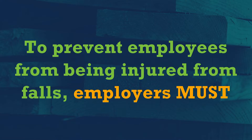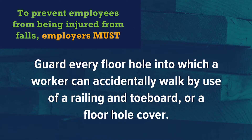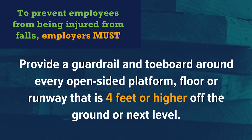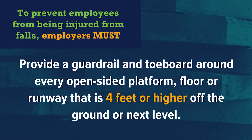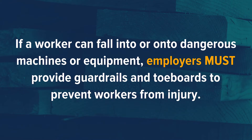To prevent employees from being injured from falls, employers must guard every floor hole into which a worker can accidentally walk by use of a railing and toe board or a floor hole cover. Provide a guardrail and toe board around every open-sided platform, floor, or runway that is four feet or higher off the ground. If a worker can fall into or onto dangerous machines or equipment, employers must provide guardrails and toe boards to prevent injury.